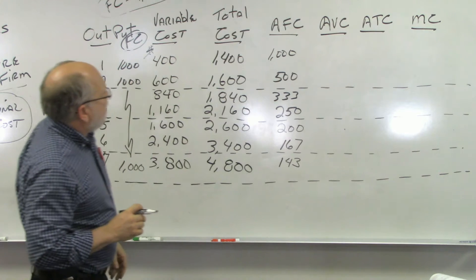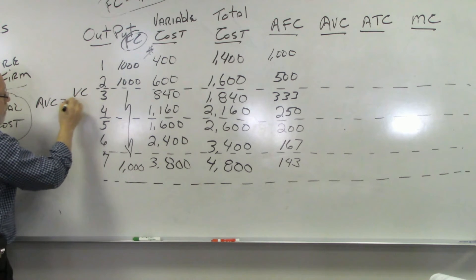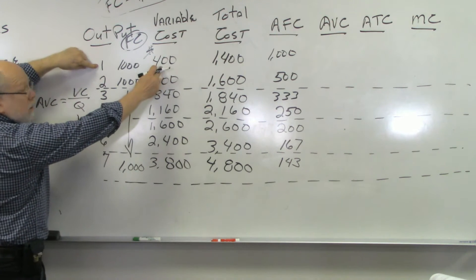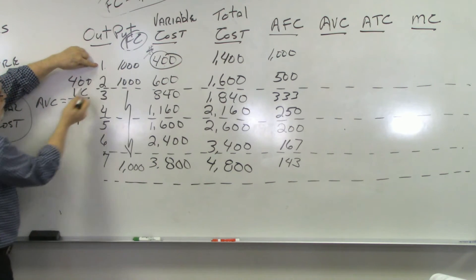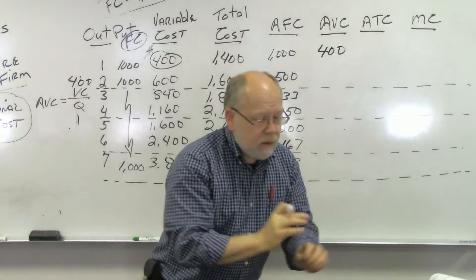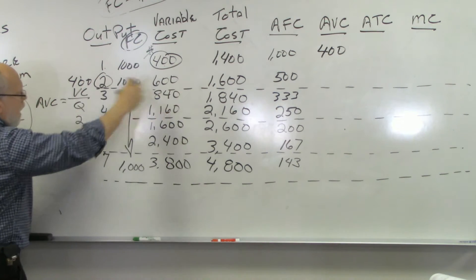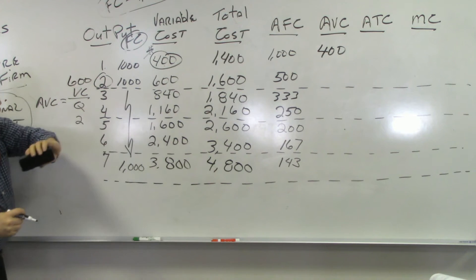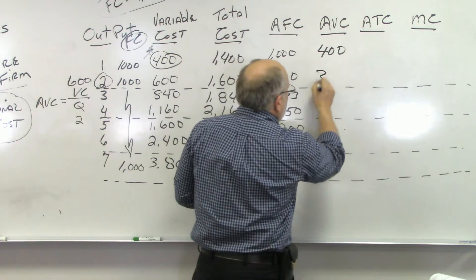Now, how do we get average variable cost? Average variable cost equals variable cost divided by quantity. At quantity 1 our variable cost is $400, so $400 divided by 1 equals $400. At output 2 our variable cost is $600, so $600 divided by 2 equals $300.